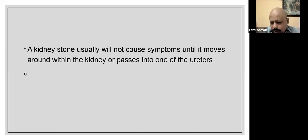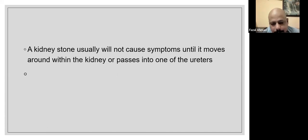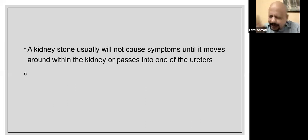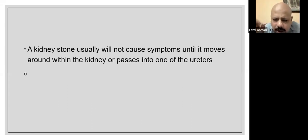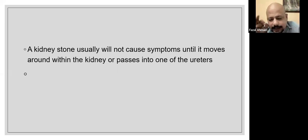One drawback of ultrasonography is that if a patient's renal system is not functioning properly, we cannot evaluate it by USG alone. Only by means of intravenous pyelography can we identify if the kidney is not working. One useful trick is that if one kidney fails, the other becomes enlarged — a condition called compensatory enlargement of the kidney.